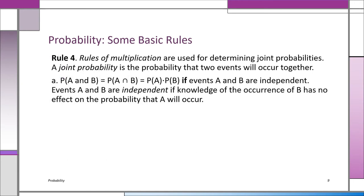The rules of multiplication are used when you want to determine a joint probability — the probability that two events will occur together. So P(A and B) equals the probability of A times the probability of B, but only if the events A and B are independent. Events A and B are independent if knowledge of the occurrence of B has no effect on the probability that A will occur.